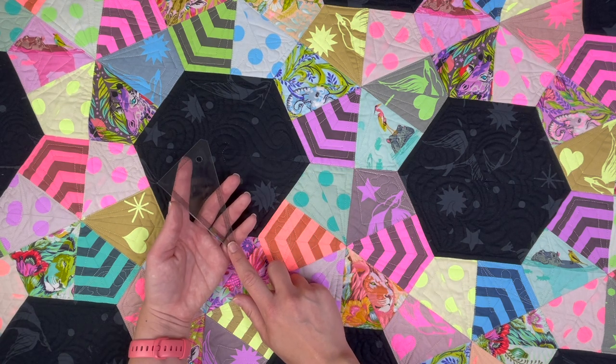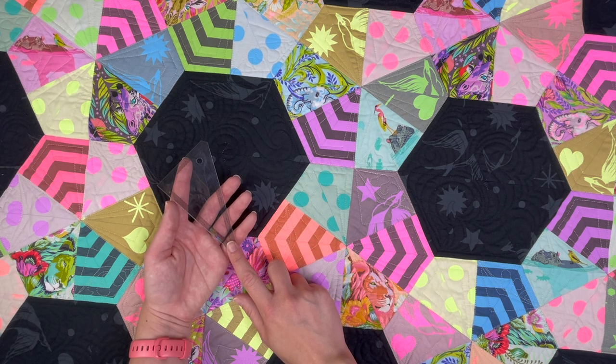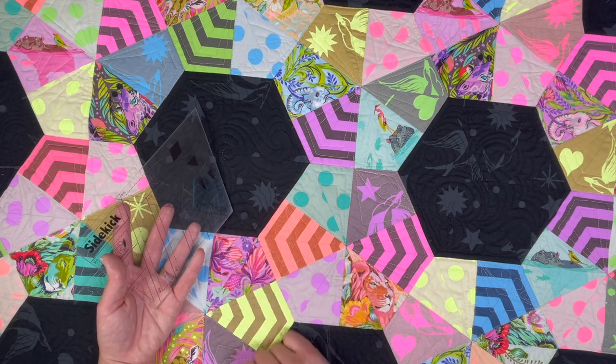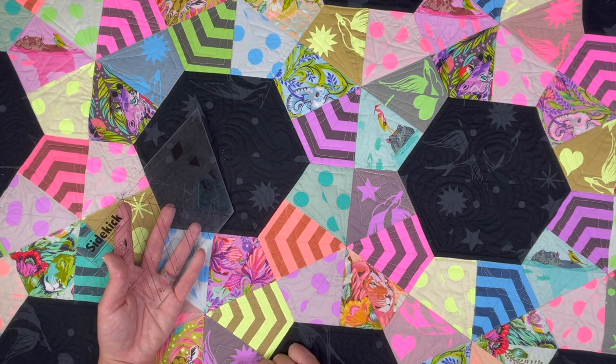You can use the half triangle from the Jaybird Quilts fussy cut shapes or I'll also show you how to do it with your sidekick ruler. Let's get started.